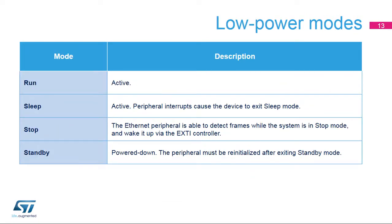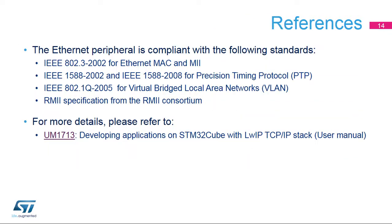Here is an overview of the peripheral status in each of the low-power modes. Only PMT mode is available in stop mode, where the peripheral waits for wake-up packets. The Ethernet peripheral is compliant with the following standards: IEEE 802.3-2002 for Ethernet MAC, IEEE 1588-2008 standard for precision networked clock synchronization, and the RMII specification from the RMII Consortium.